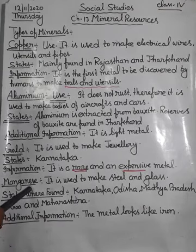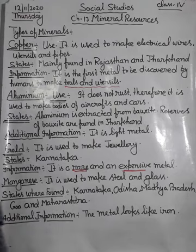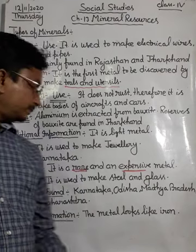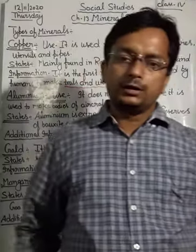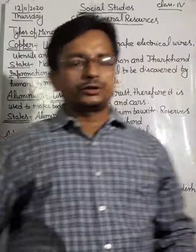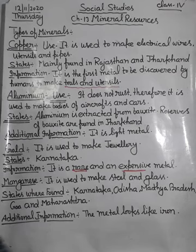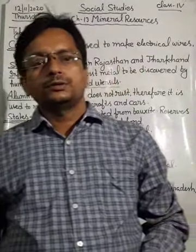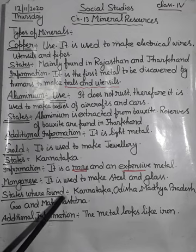Next is manganese. Manganese is used to make steel and glass — the glass in which we drink water. States where manganese is found: Karnataka, Odisha, Madhya Pradesh, Goa, and Maharashtra.